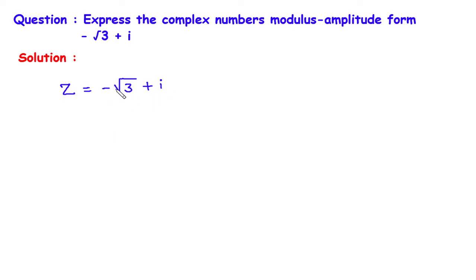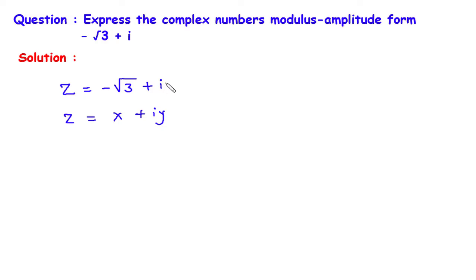Now if we compare this equation with the standard equation, complex number Z is equal to X plus iY. Here X is the real part and Y is the imaginary part. So the real part is minus root 3 and the imaginary part is 1. Therefore X is equal to minus root 3 and Y is equal to 1.